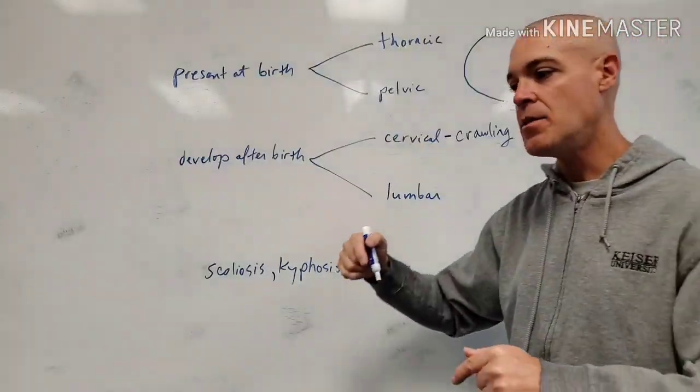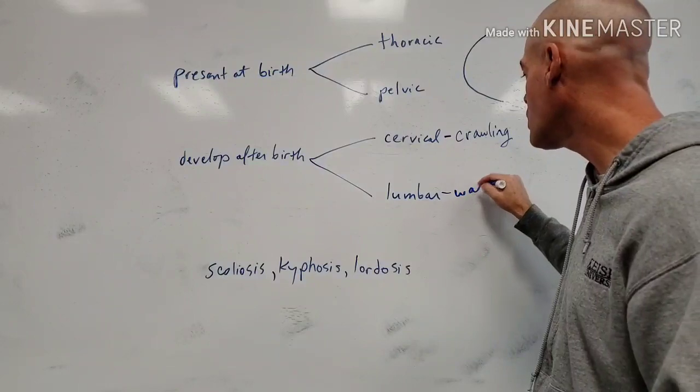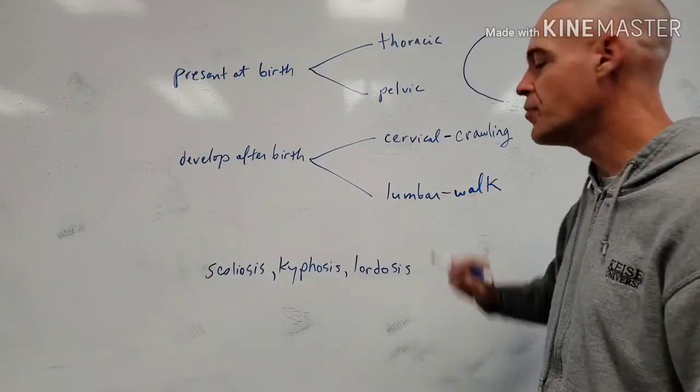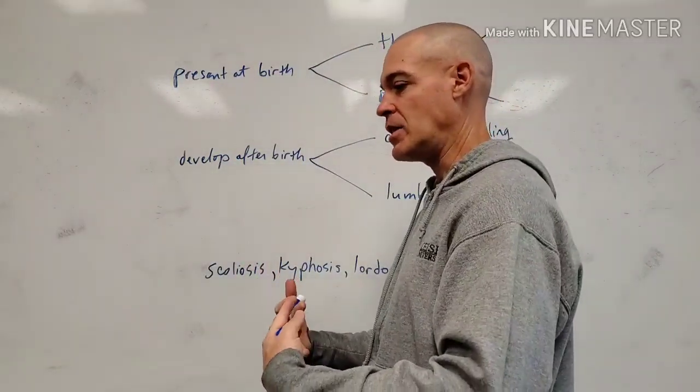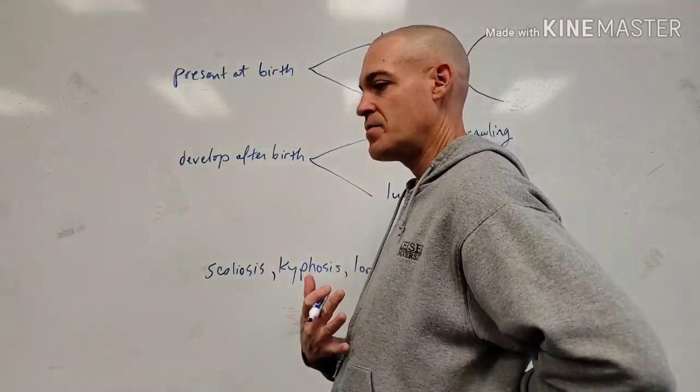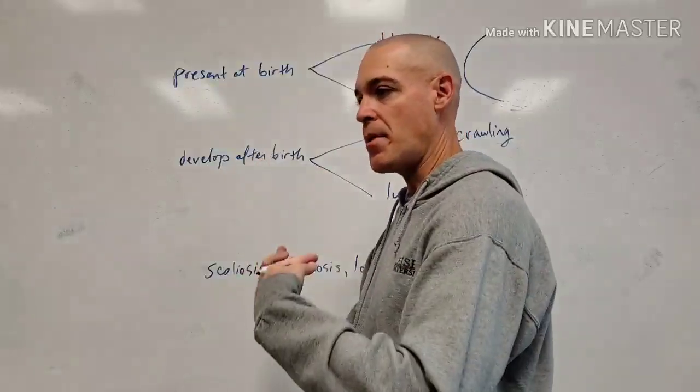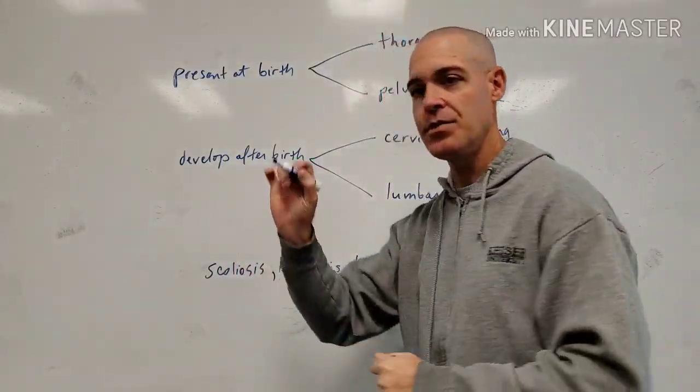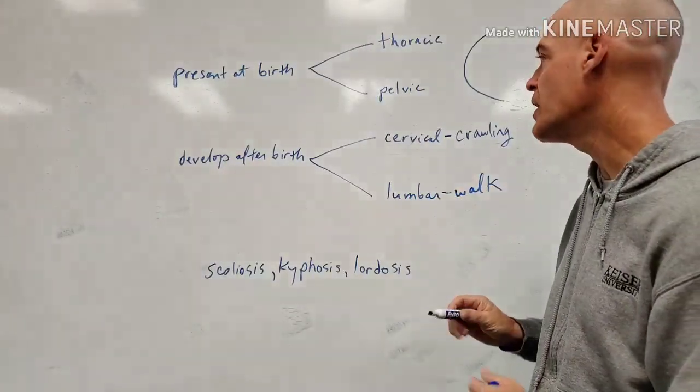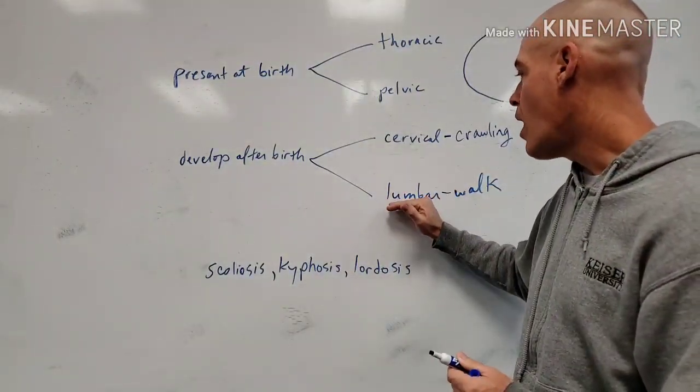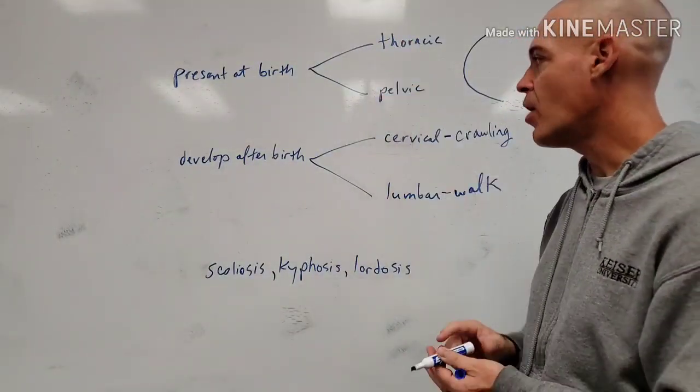Then as the baby starts to walk, it will develop the lumbar curve. Baby's going to come stand up on its legs. That is going to develop a curvature down here due to weight bearing. Again, the cervical curve and lumbar curve are both the same directions, right? And opposite, again, the thoracic and pelvic.